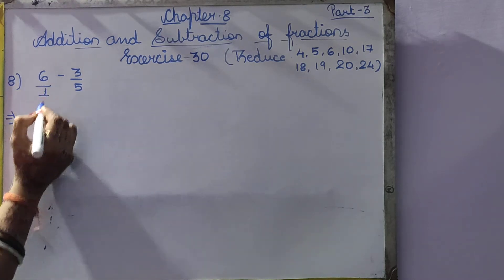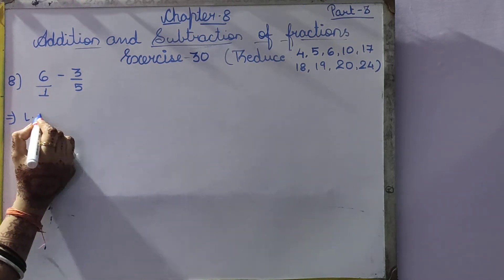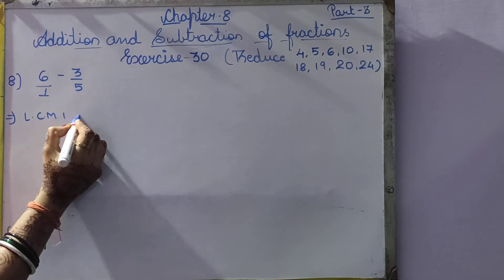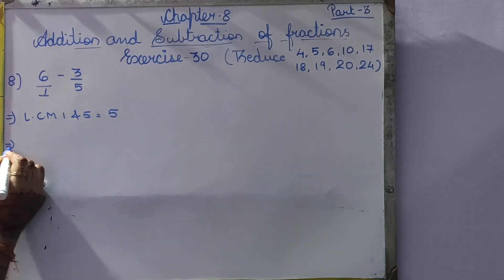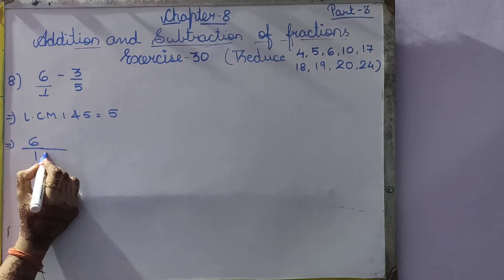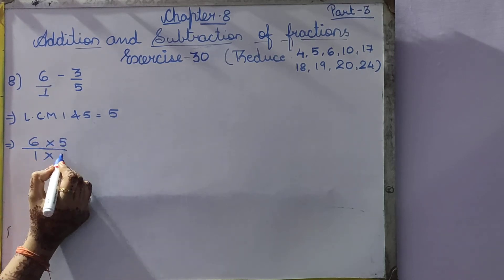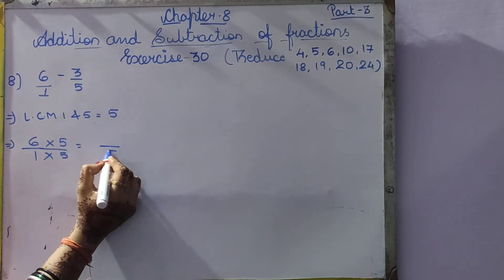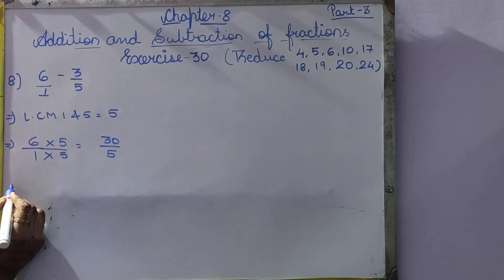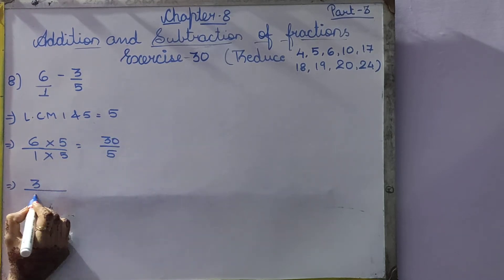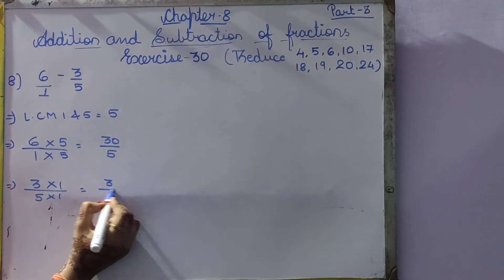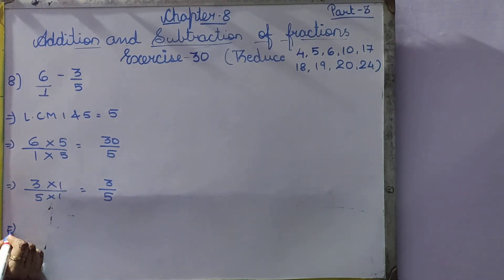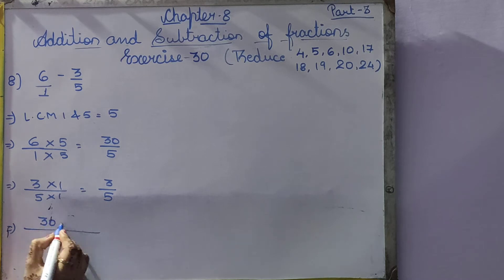See, there is nothing written under the 6, so we can put 1 as its denominator. Now we take out the LCM of 1 and 5, so LCM of 1 and 5 will be 5. So 6 by 1: 6 into 5 we will do — 6 5's are 30. Here 3 by 5: in the table of 5, how many times does 5 come? 1 time. So 3 1's are 3, and 5 1's are 5.